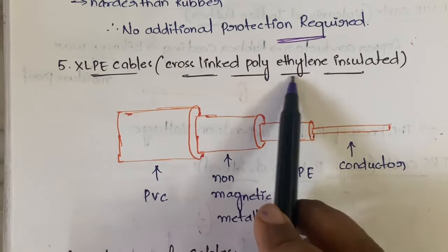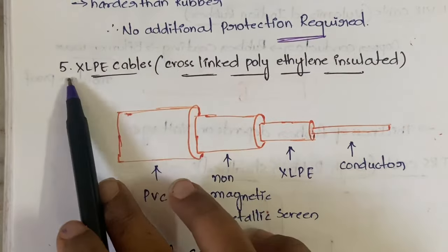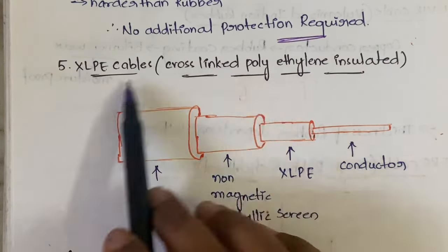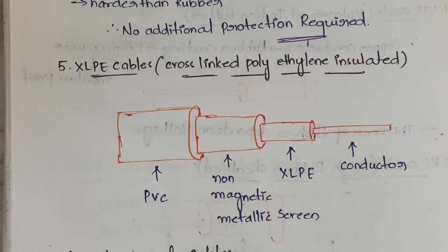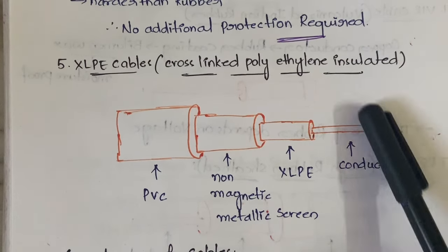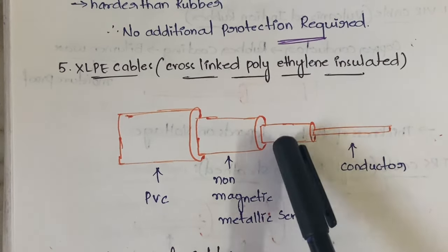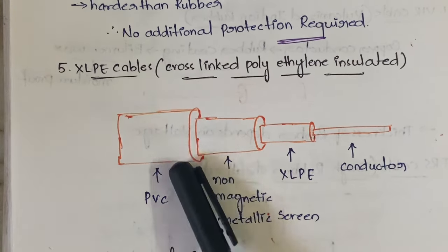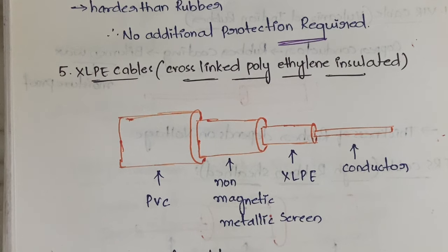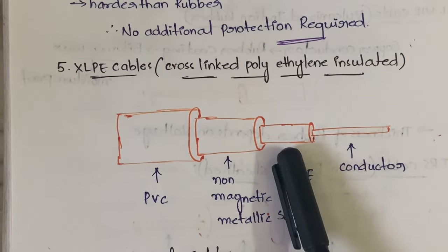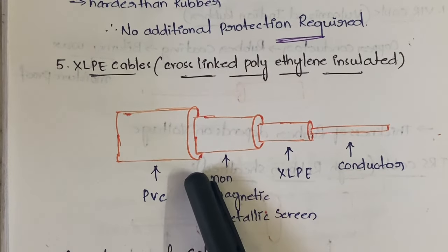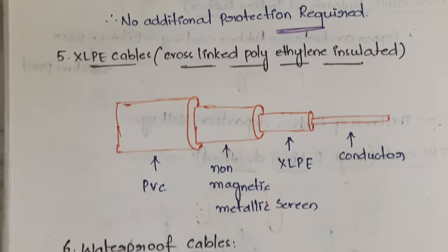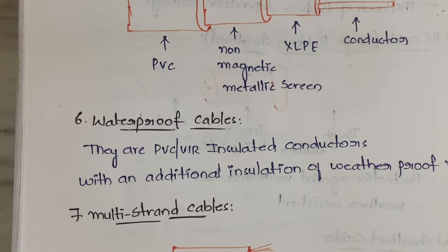The fifth type is XLPE cable — Cross Linked Polyethylene insulated cable. Here the conductor is coated with XLPE, around the XLPE there is a non-magnetic metallic screen, and around that is a PVC coating. XLPE cables are very strong because of these multiple layers: conductor, XLPE, non-magnetic metallic screen, and PVC.